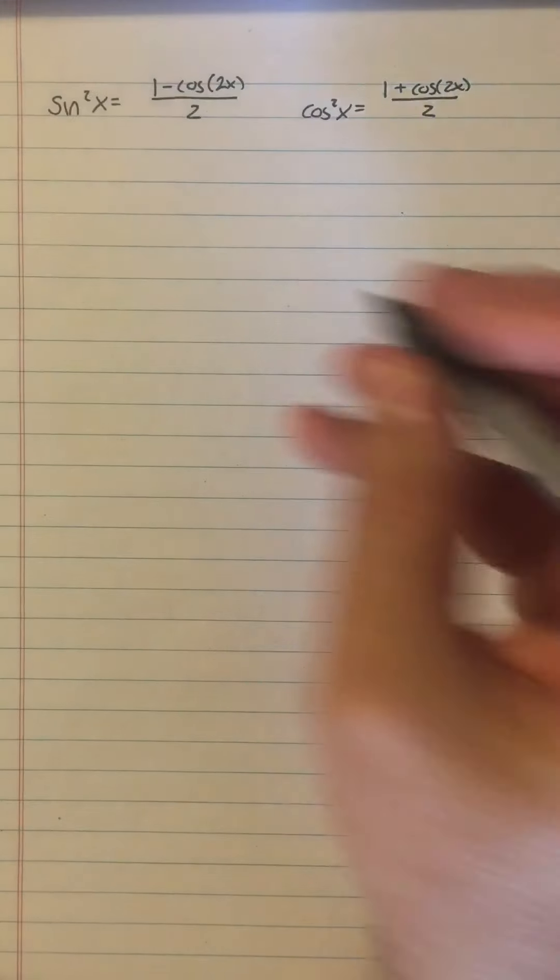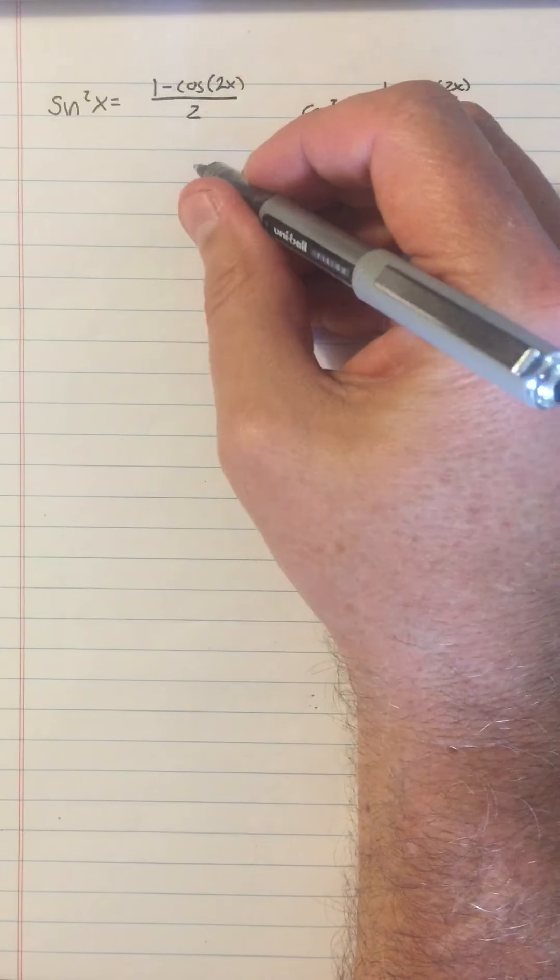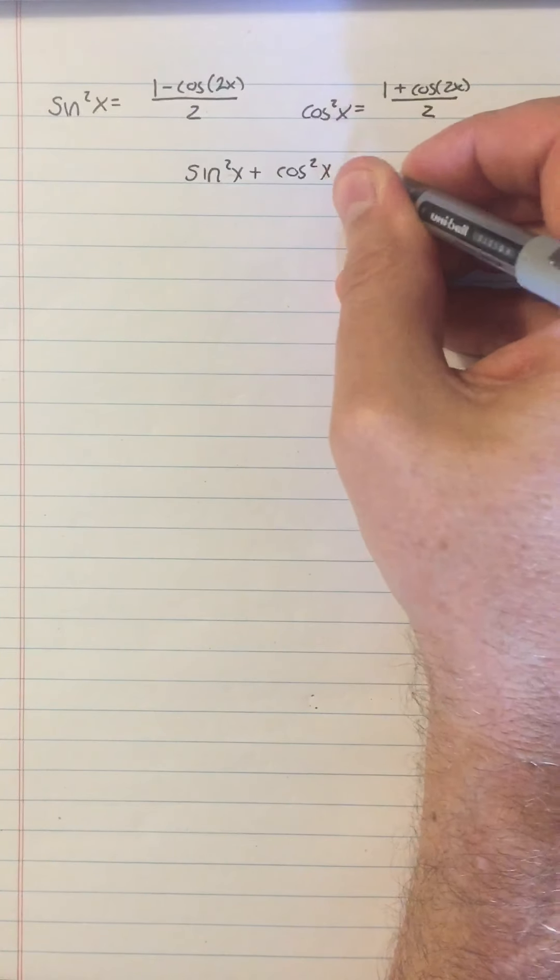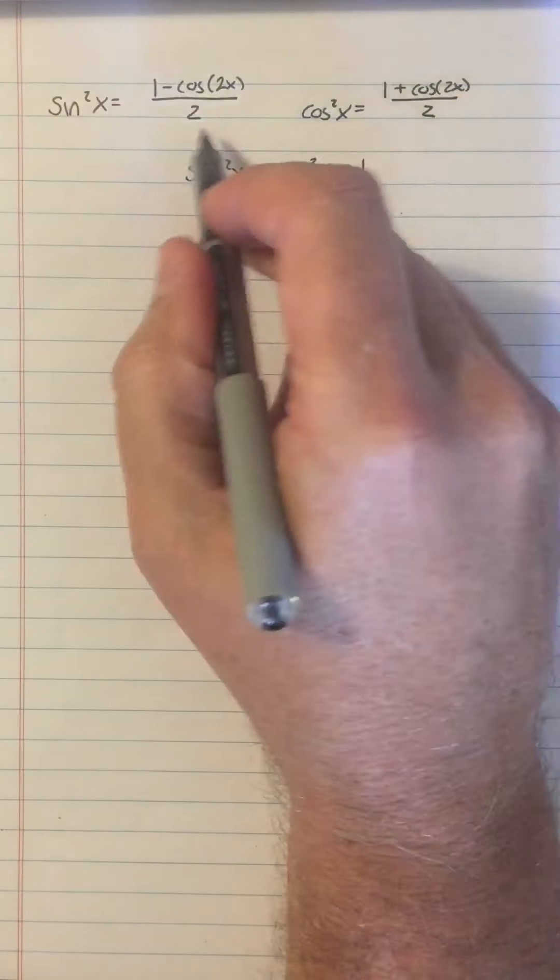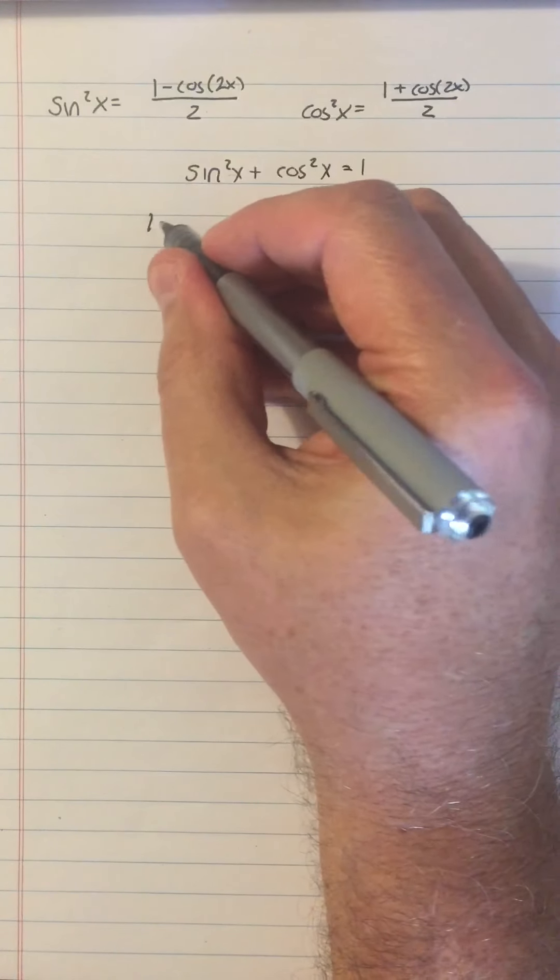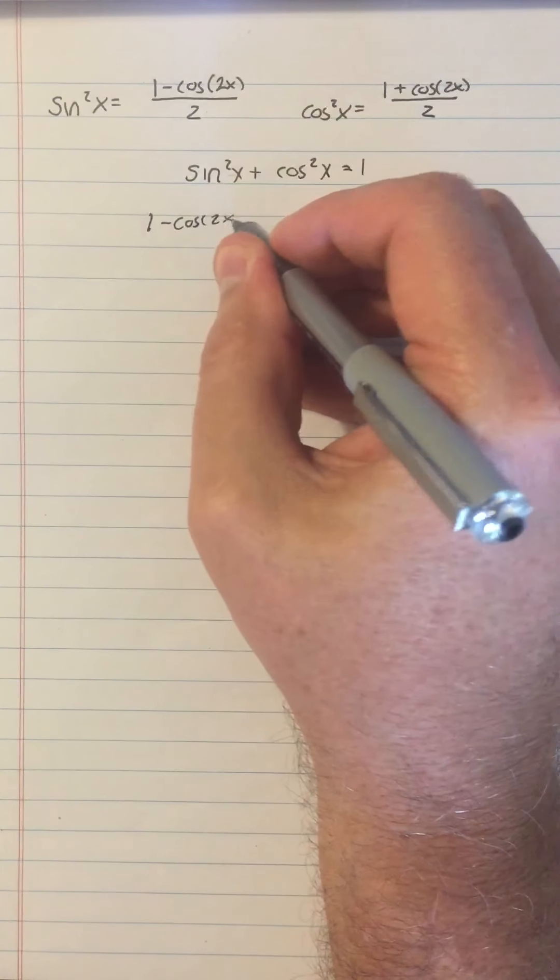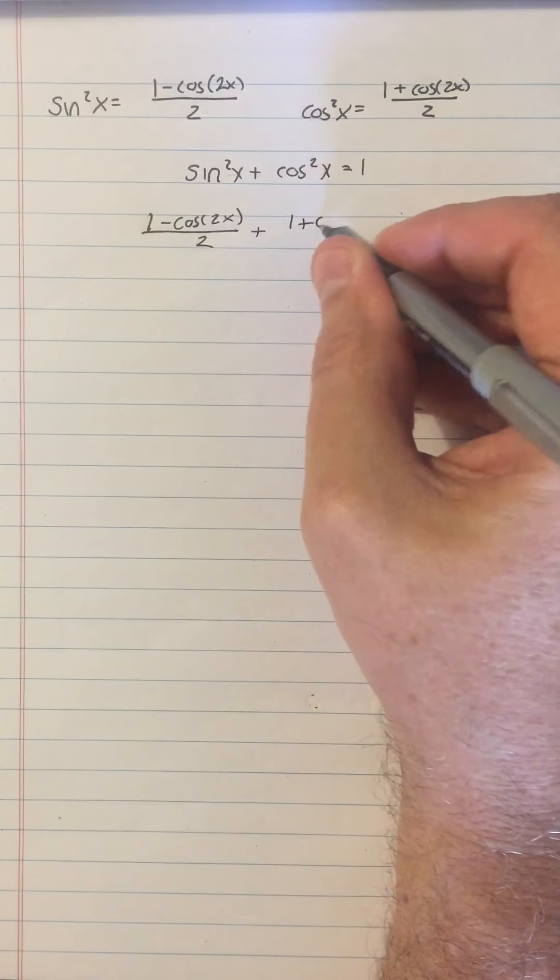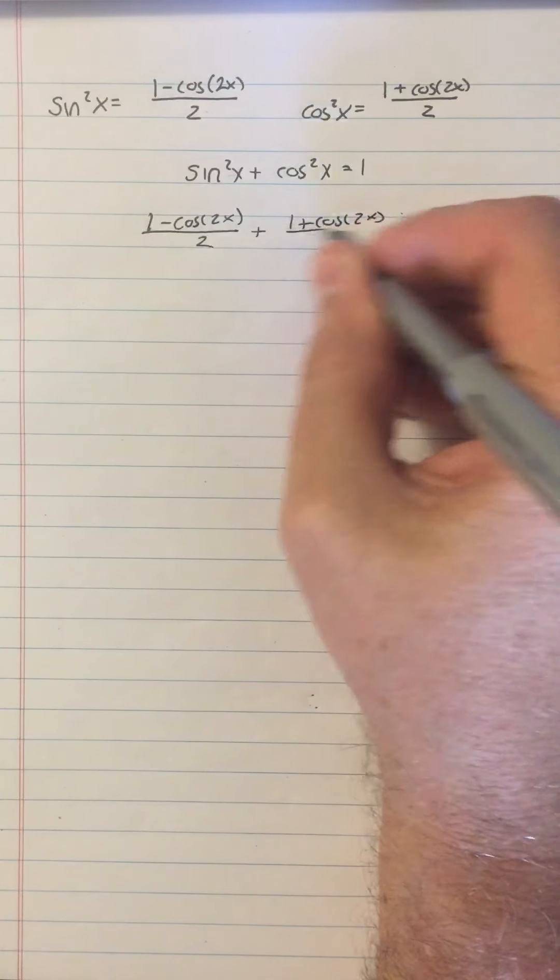It seems a little incredible almost, but if you think about some things that you know about sine squared and cosine squared, like the first thing you know is that sine squared plus cosine squared equals 1. Well, if I add these two things, am I going to get 1? 1 minus cosine of 2x over 2 plus 1 plus cosine of 2x over 2.